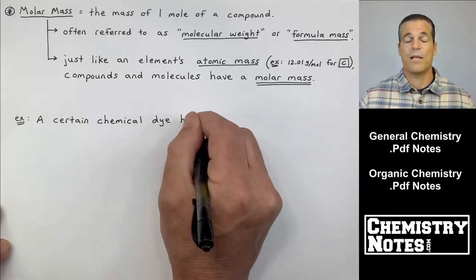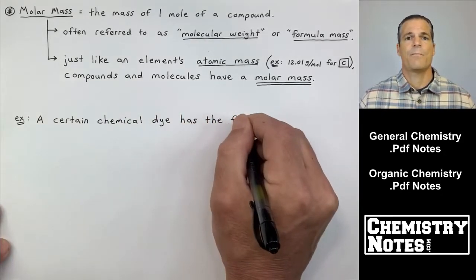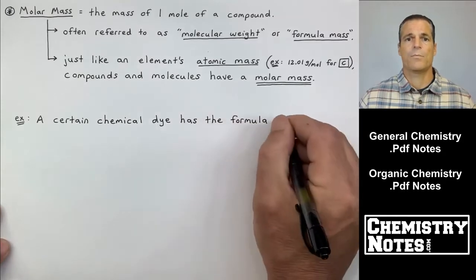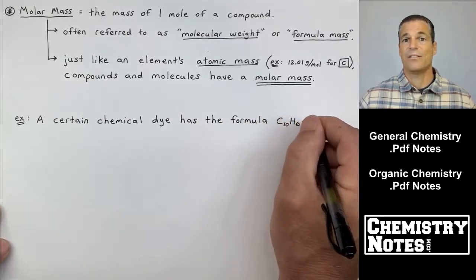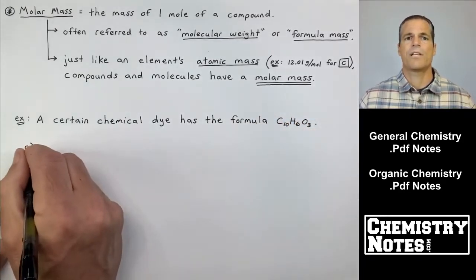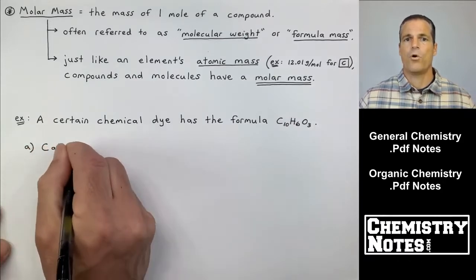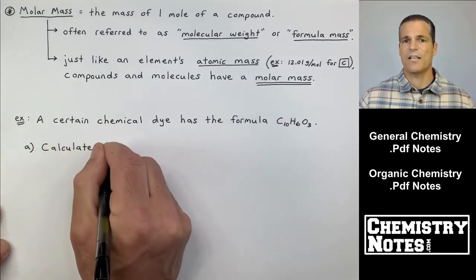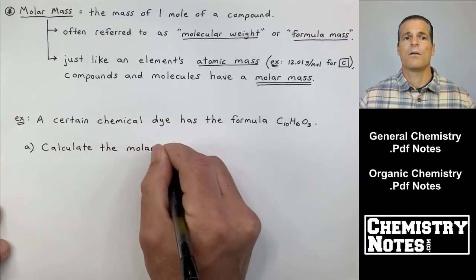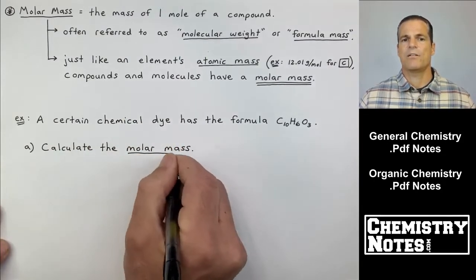Well, compounds and molecules have a molar mass, not an atomic mass, because compounds aren't individual atoms. Let's do an example, should make lots of sense. If you have a periodic table in front of you this will be very intuitive. We have a certain chemical dye that has the formula C10H6O3.